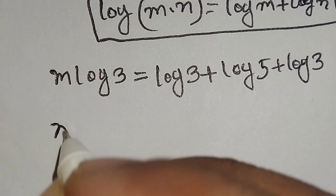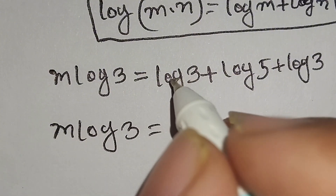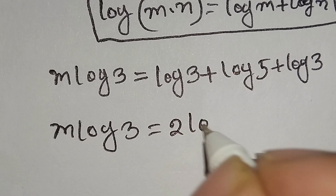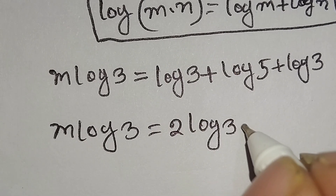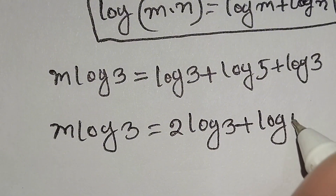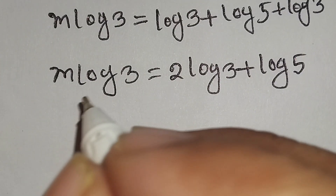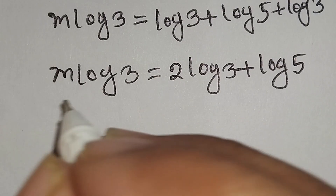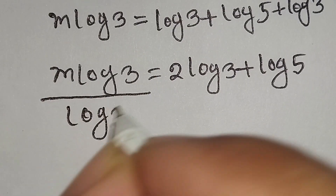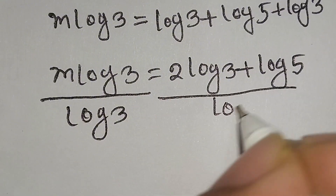So log 3 plus log 3 is equal to 2 log 3. We can write m log 3 over log 3 here, giving us the simplified expression.